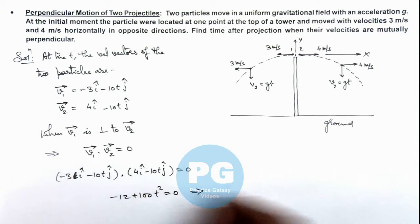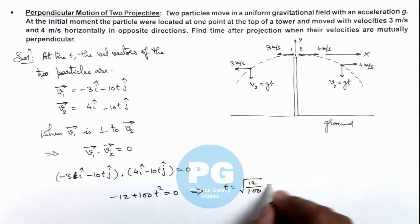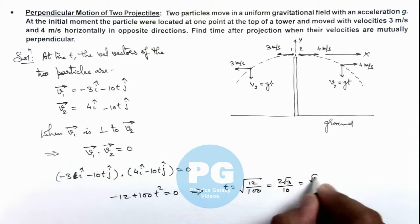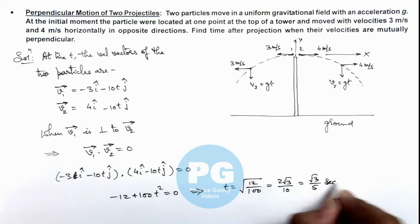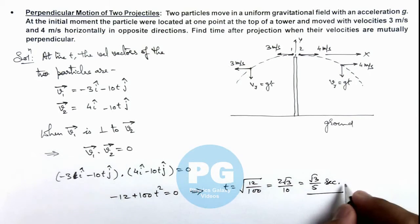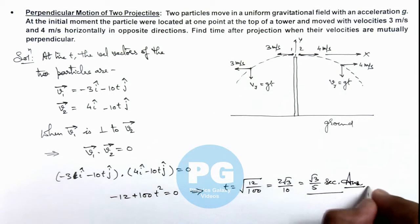This implies we are getting the value of t as root of 12 by 100, which is 2 root 3 by 10, or it is root 3 by 5 seconds. After this much of time, you can say the velocity vectors will be perpendicular to each other. That will be our final result.